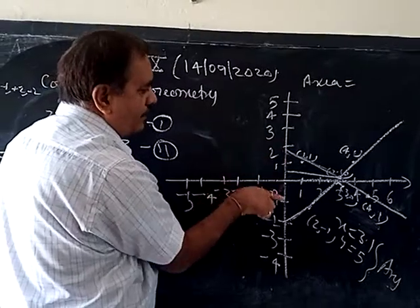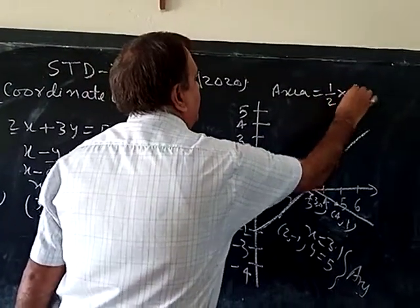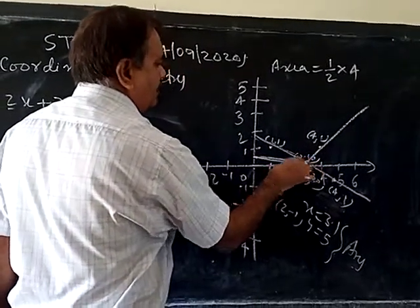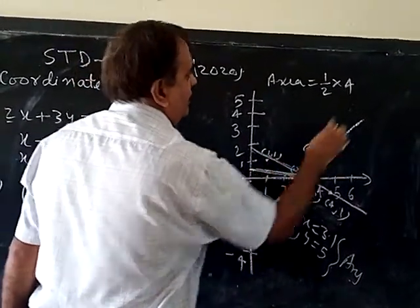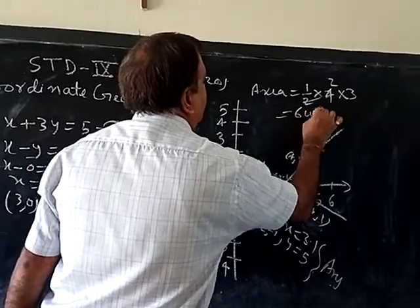So 1, 2 house here, 3, 4. So half. Base is 4. What is height? This is the height, because this is the vertex. How much it is? 3 into... half into 4 into 3. That is equal to 6 unit square.